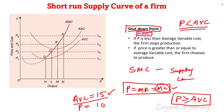Price must be greater than or equal to average variable cost. So just considering profit maximization conditions: profit, loss, and normal profit. Even if the firm is making a loss, the firm will still produce as long as it can cover its variable costs. If it cannot cover fixed cost, the firm continues at a loss.